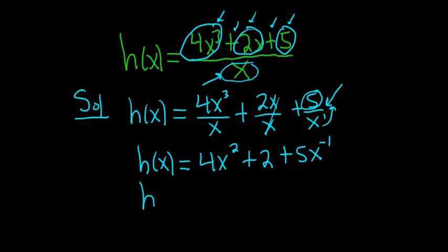Okay, so now we're ready to take the derivative. So h prime of x. Using the power rule, 2 times 4 is 8, so you get 8x.